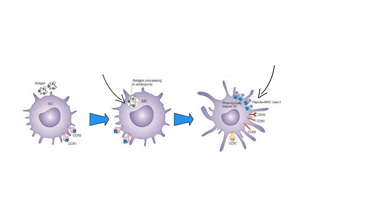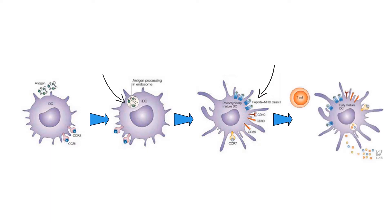Since the dendritic cell is not actually infected, the immune system does not kill the dendritic cell. Rather, viral antigen on MHC-2 leads to activation of CD4-T helper cells that have T cell receptors specific to the viral antigen being presented.